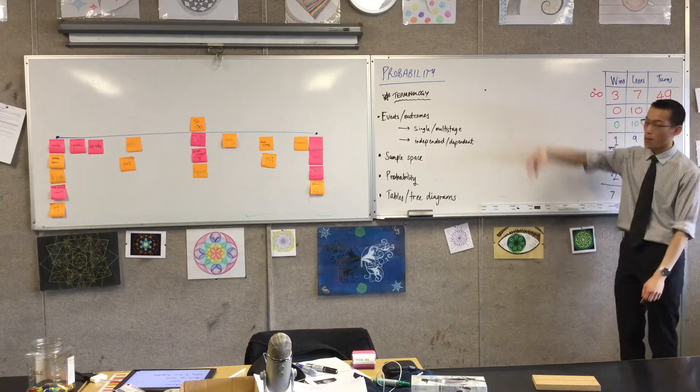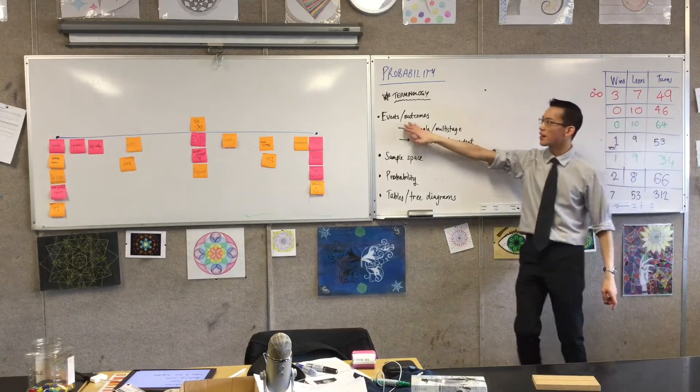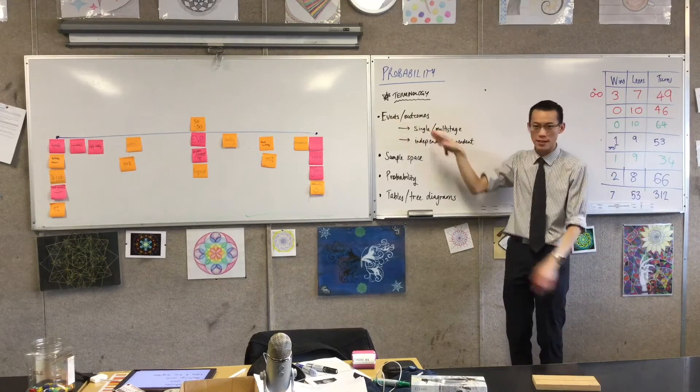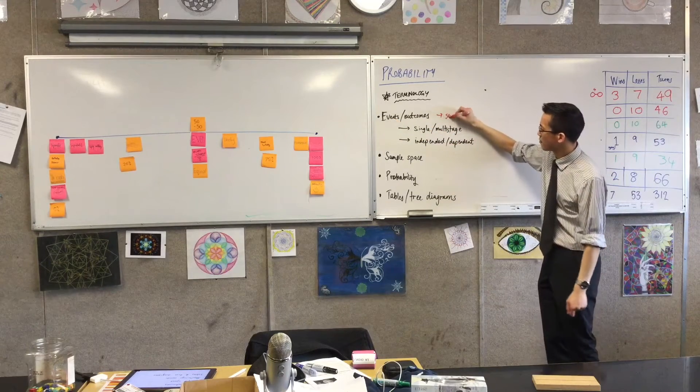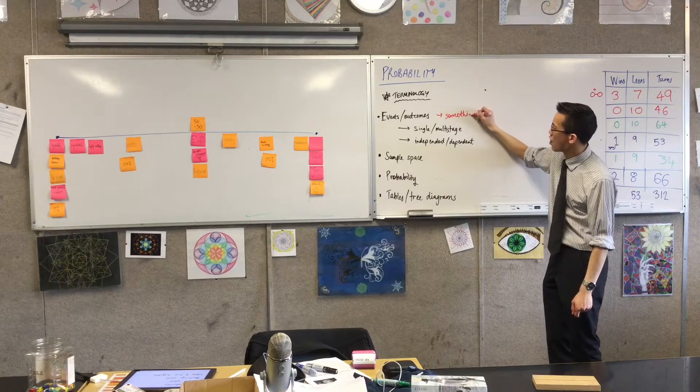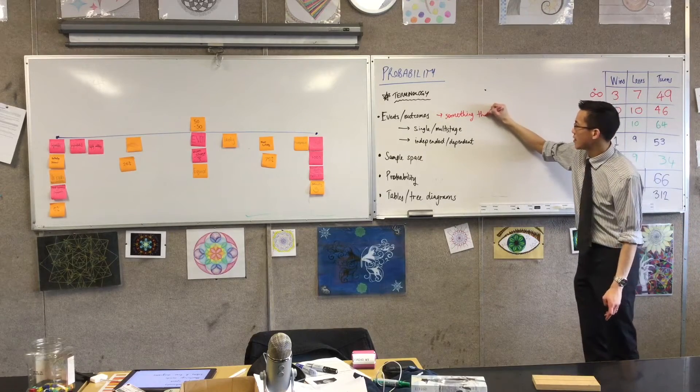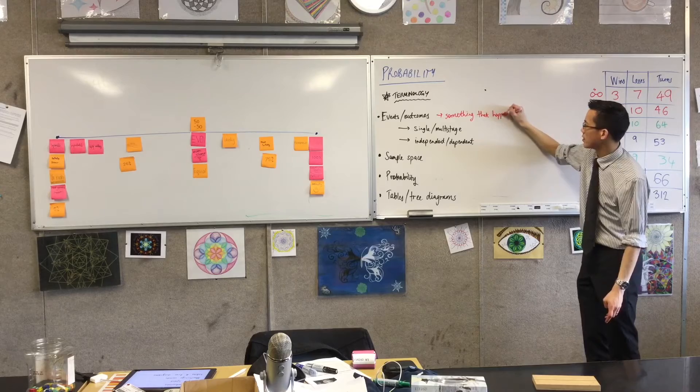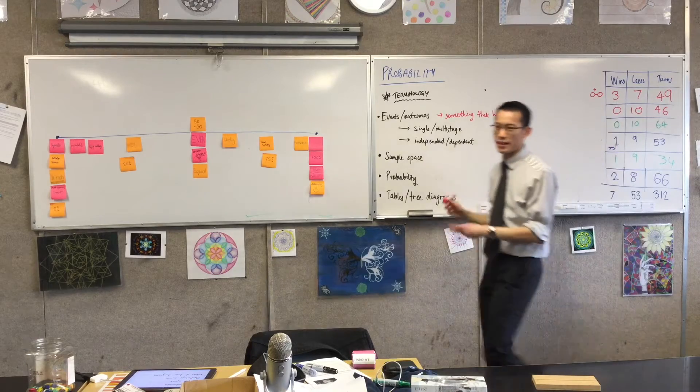Remember I said algebra is the mathematics of unknown numbers, and probability is the mathematics of uncertain events. An event means something that can happen, and you can know whether it happened or didn't.